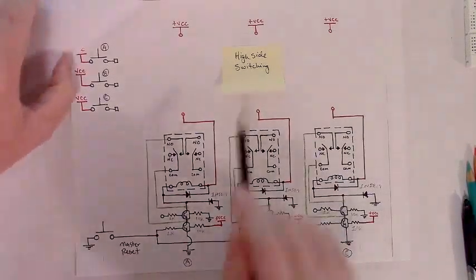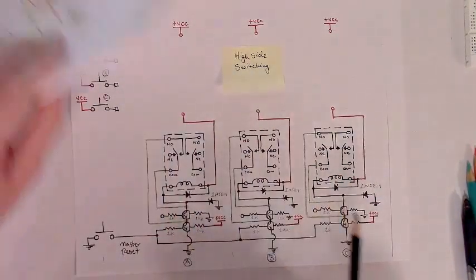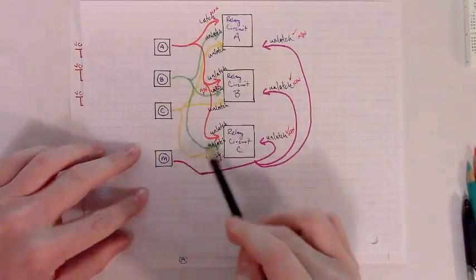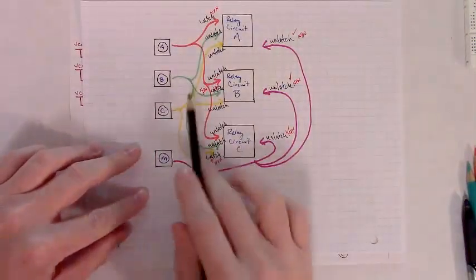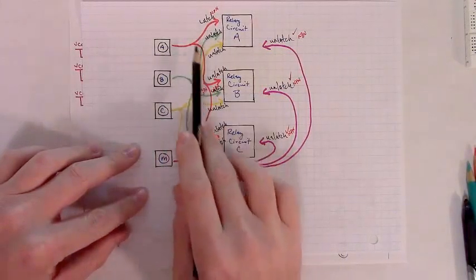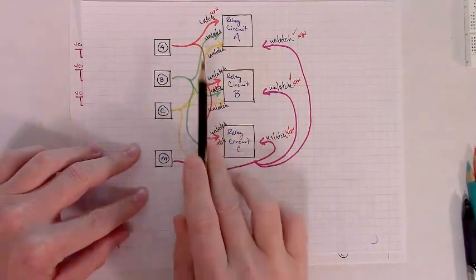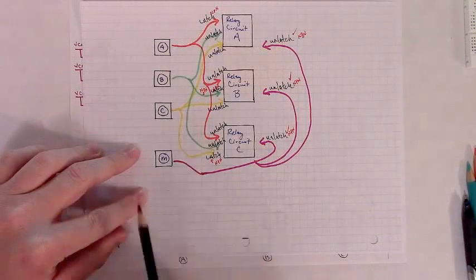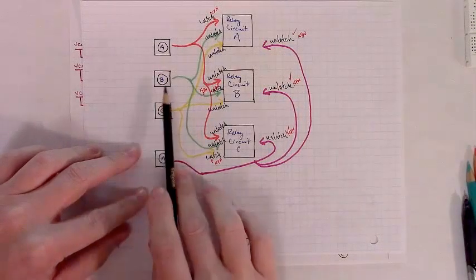What do we have to do up here in the high side though? We have nine lines up there. We have one line coming off button A branching into three. It'll latch A, it'll unlatch B, and unlatch C. A press of A will.